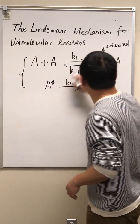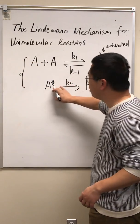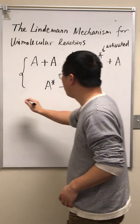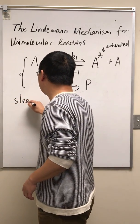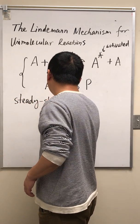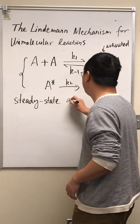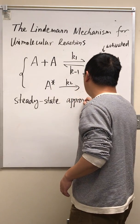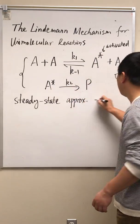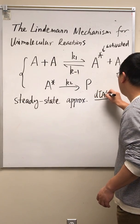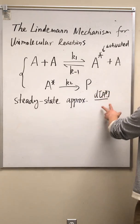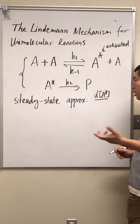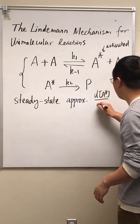Because A is activated, it's energized, it's unstable, we'll apply the steady state approximation to A*. What does this mean? This means the change, the rate of the change of A star is zero.